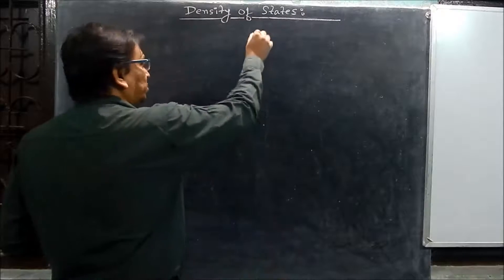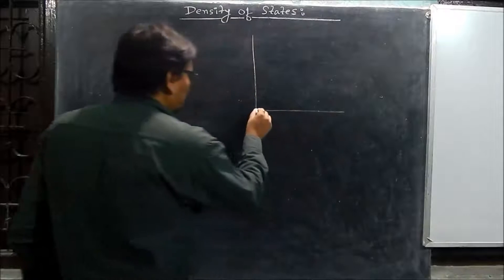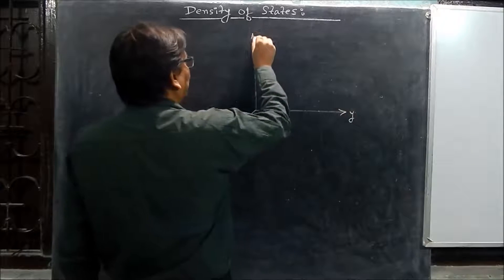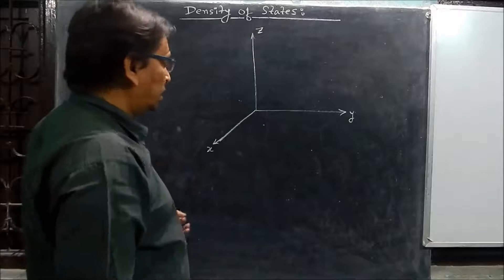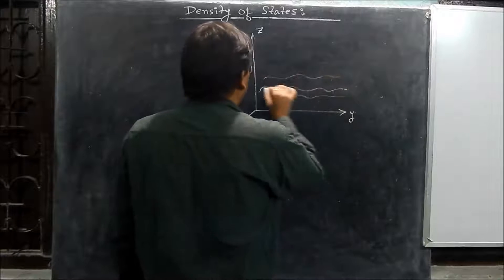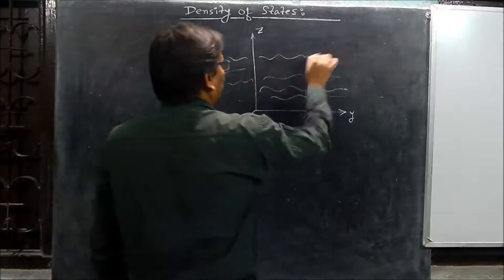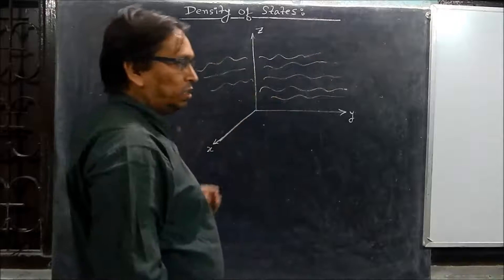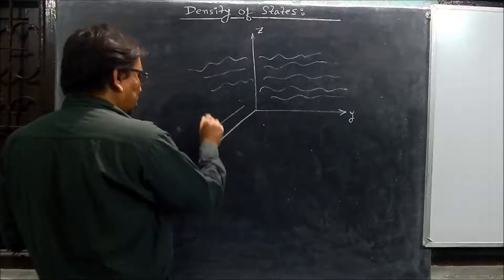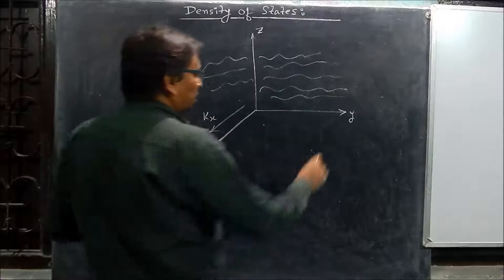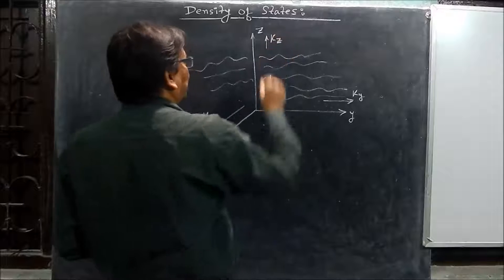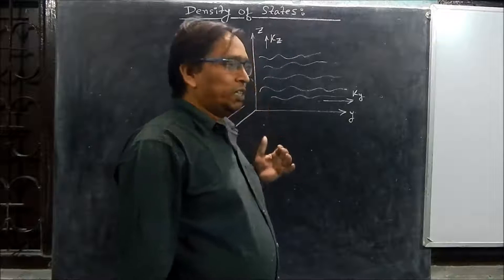We consider three arbitrary axes: x, y, and z. Any particle moving here will behave as a wave, and these waves are not fixed — they can move in random directions. We take a vector space for this: kx along the x direction, ky along y, and kz along z. These are the vector spaces.